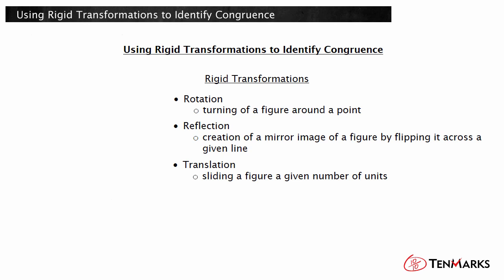Because side length is preserved, one rigid transformation or a sequence of rigid transformations on a triangle will produce an image that is congruent to the original triangle by the side-side-side criterion for triangle congruence. Let's look at some examples.